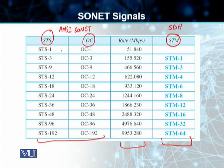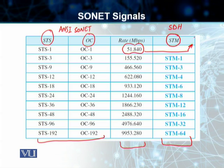For example, STS-1, or OC-1, supports a data rate of 51.84 megabits per second. This is very close to the DS3 data rate we discussed previously. STS-1 is greater than DS3, which was 44.73 Mbps — and when you add headers and overhead, you arrive at 51.84 Mbps. So STS-1 was originally designed to accommodate data rates equivalent to the DS3 standard.